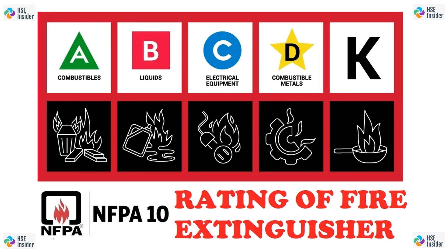Next comes Class B fires. Extinguishers with a Class B rating are designed for use on fires that involve flammable liquids and gases, like oil-based paint, alcohol, gasoline, etc. Class B rated extinguishers also have a number associated with them. The numerical rating for Class B fires indicates the coverage area in square feet that the extinguisher can effectively cover.